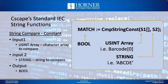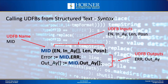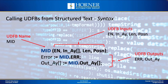Now let's talk about user-defined function blocks we've added for string handling in the standard IEC editor. Before getting into specific UDFBs, let's cover the syntax for calling them in structured text. You have a UDFB called mid, and in between round brackets you have four input variables separated by commas: EN, EN_array, LEN, and position. The UDFB has two outputs: ERR for error, and an output array which is a string type output.